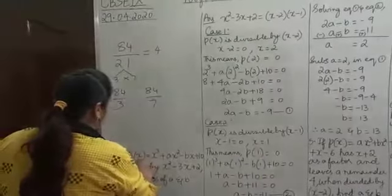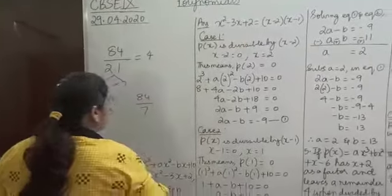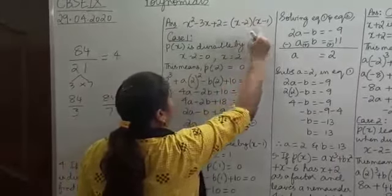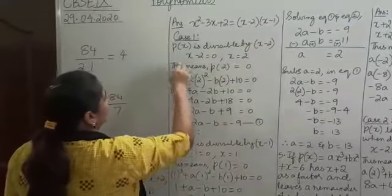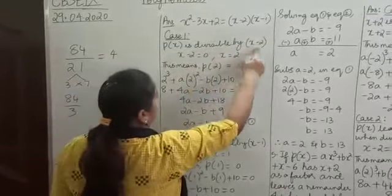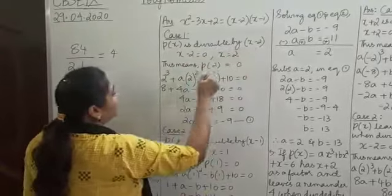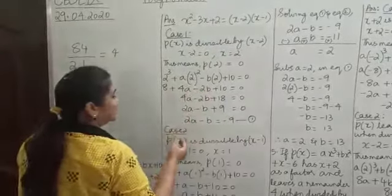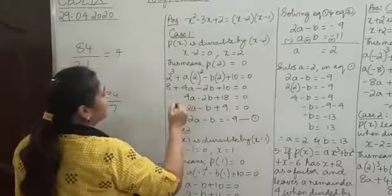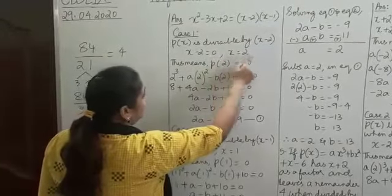Since P of X is divisible by X squared minus 3X plus 2, it means P of X is divisible by X minus 2 and also by X minus 1. Case 1: P of X is divisible by X minus 2. Setting X minus 2 equal to 0, we get X is equal to 2.